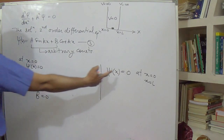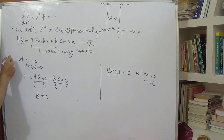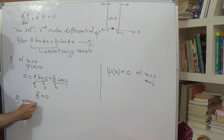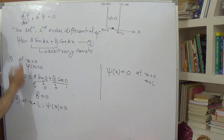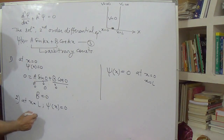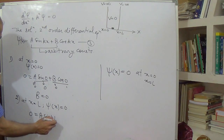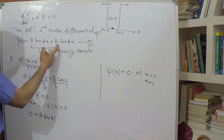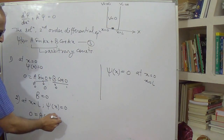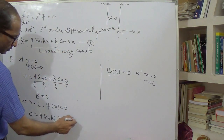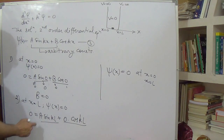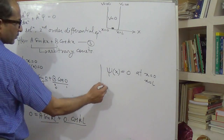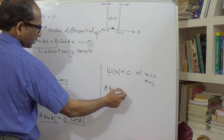Now applying the second boundary condition at x=L: ψ(L) = 0. Putting this into equation 3 with B=0, we get A·sin(kL) = 0. Since A cannot be zero (that would give a trivial solution), we must have sin(kL) = 0.